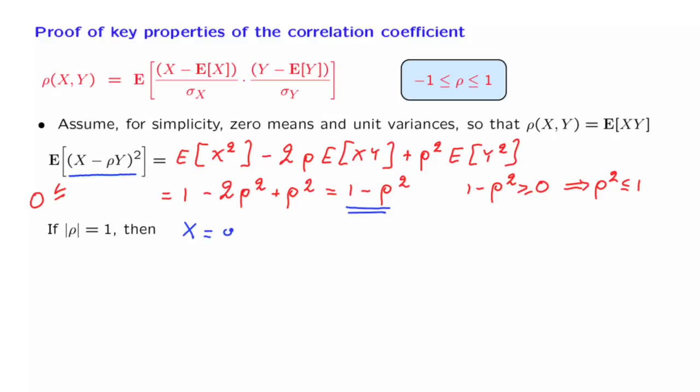So x is going to be equal to ρ times y. And this will happen with essential certainty. Now, also because the absolute value of ρ is equal to 1, this means that we have either x equal to y, or x equal to minus y, in case ρ is equal to minus 1.